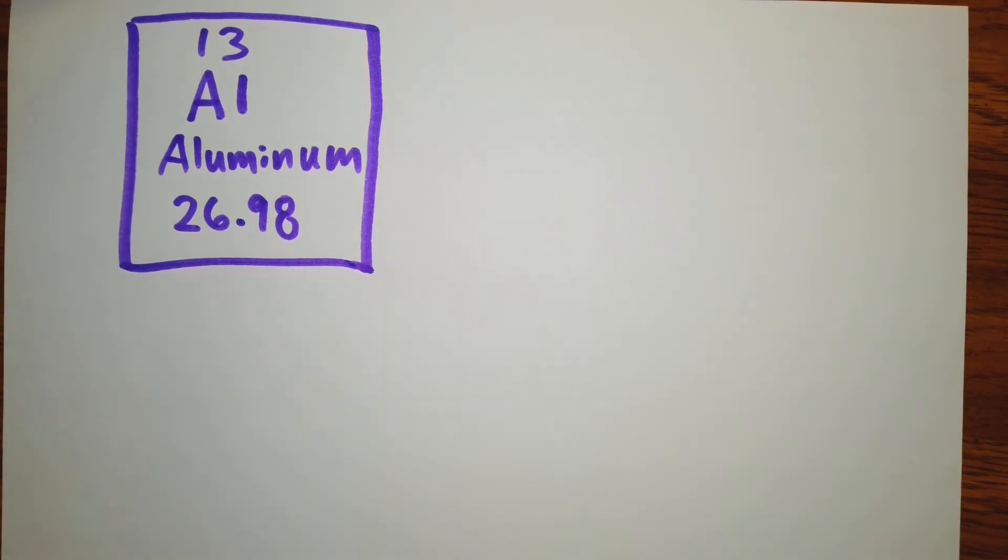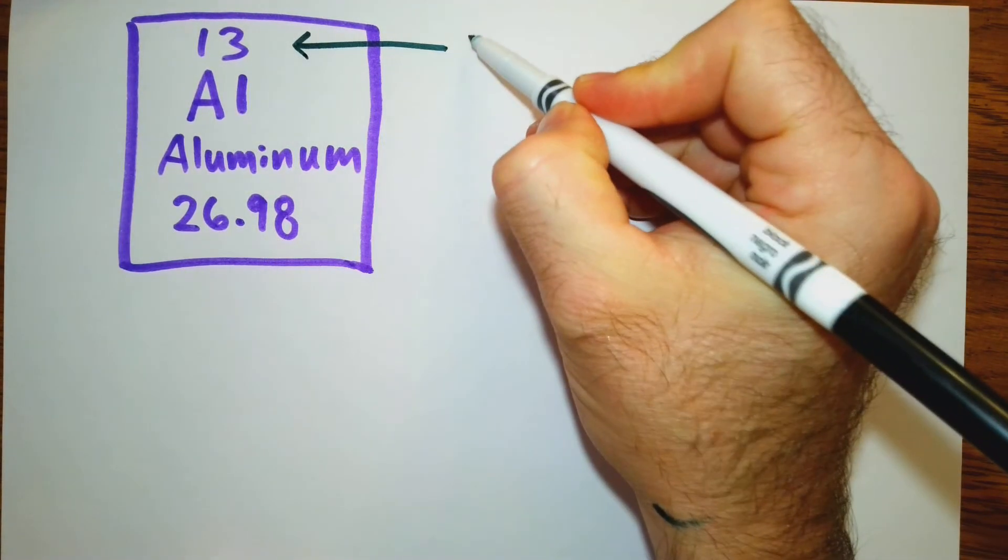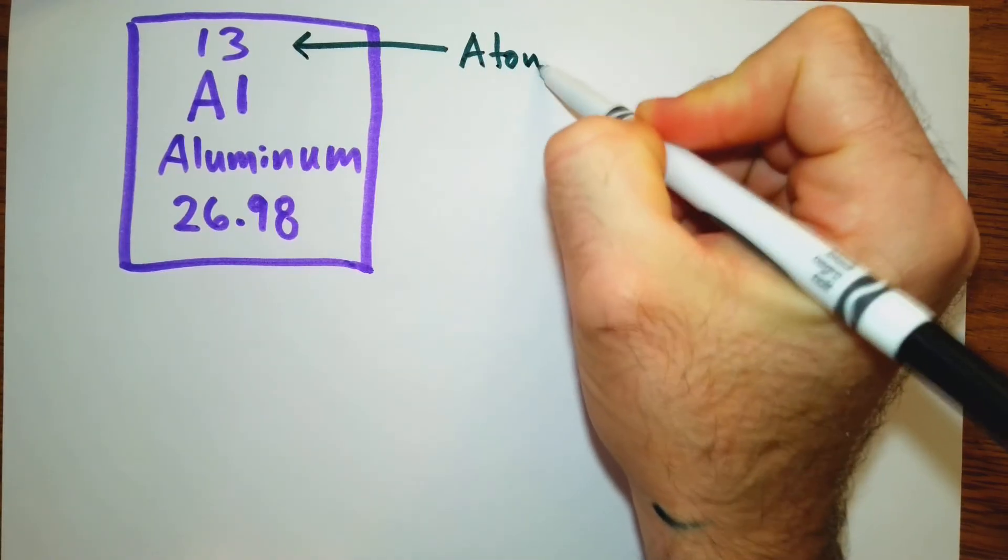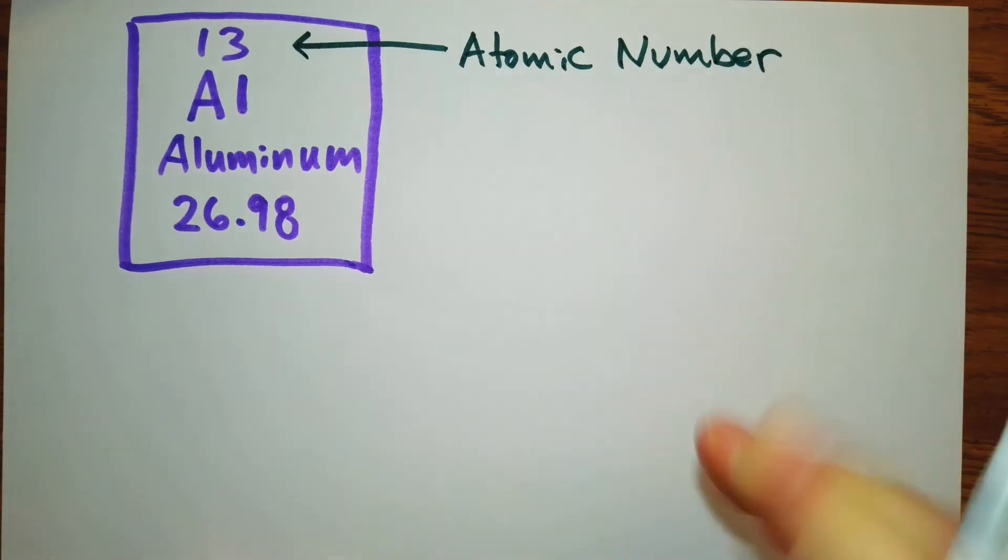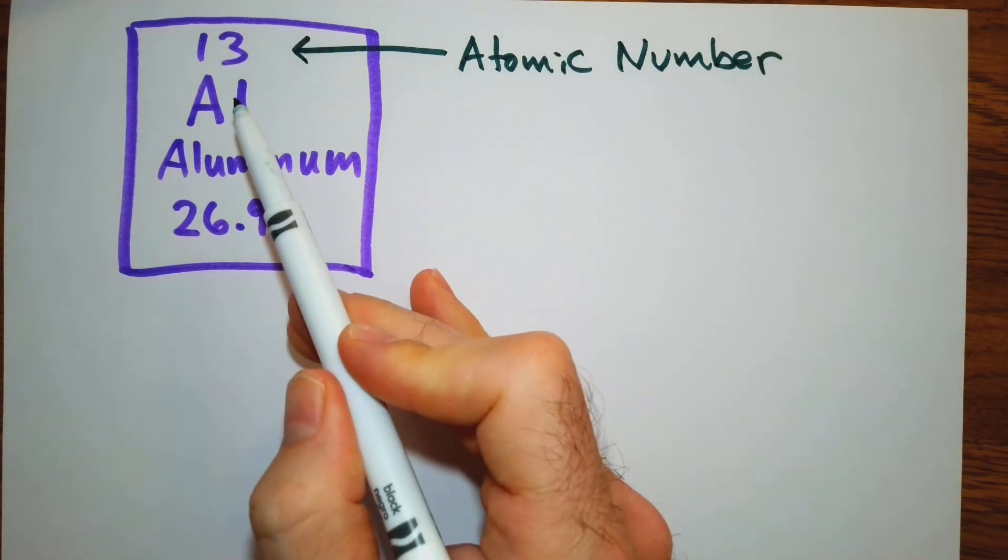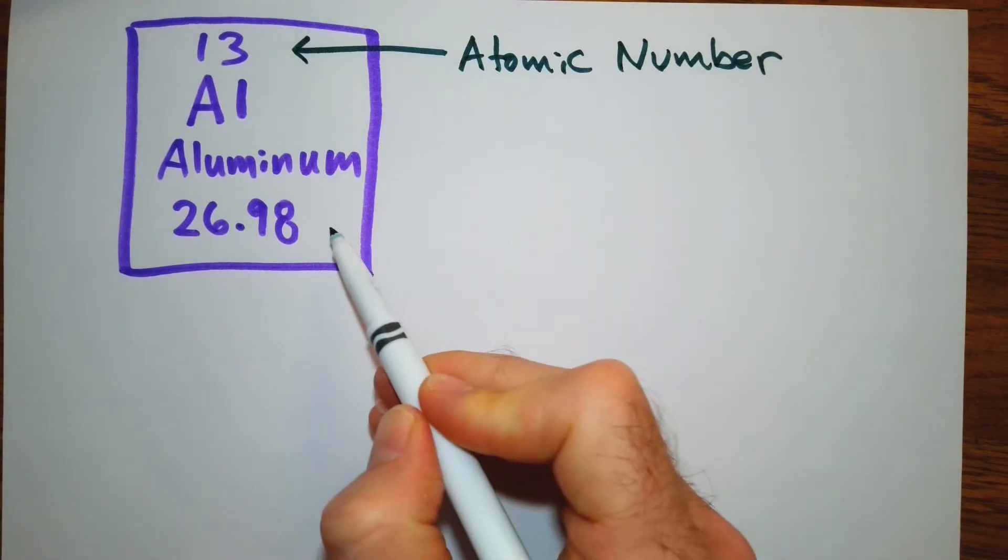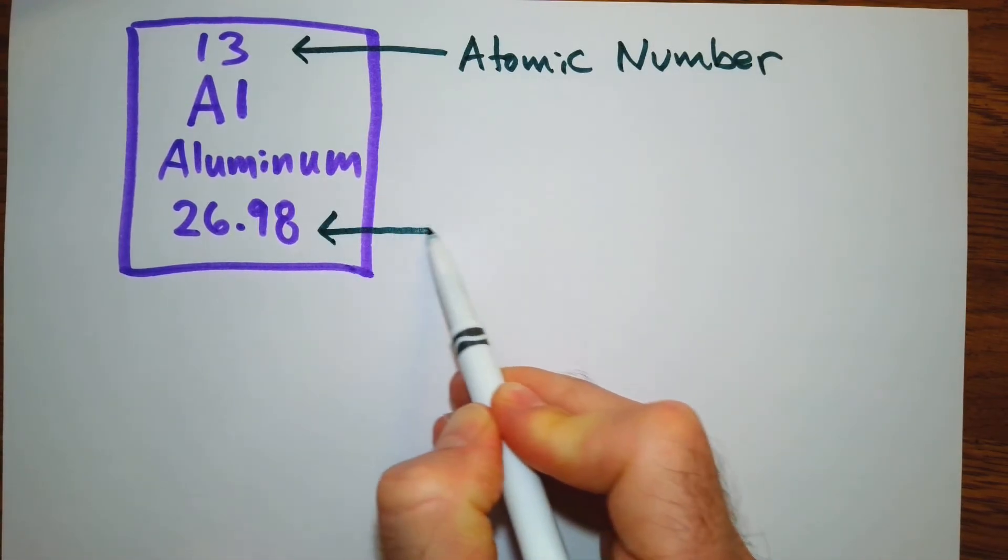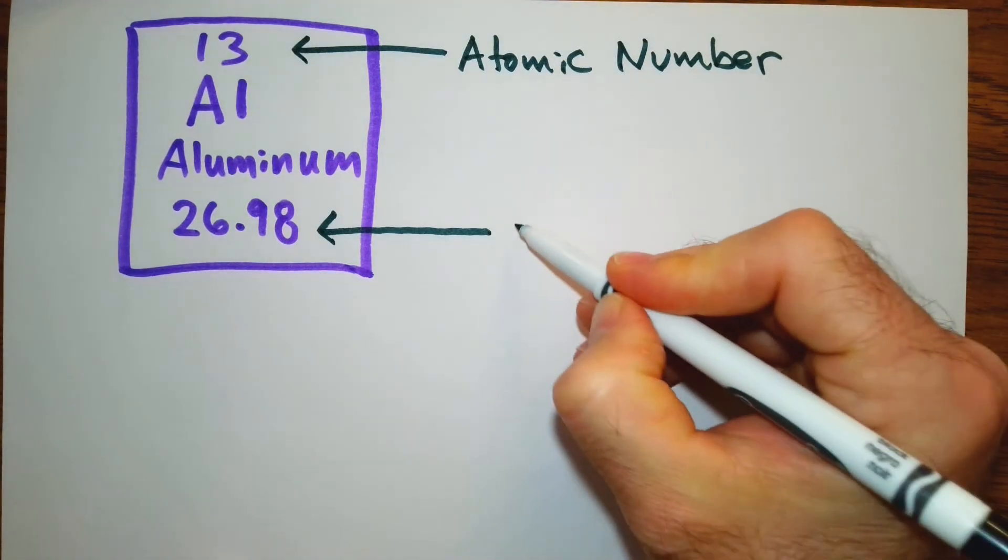All right, in this periodic table block, we have aluminum. And right here, this is our atomic number. Our symbol is Al. Our name of the element is aluminum. And our mass number is 26.98.